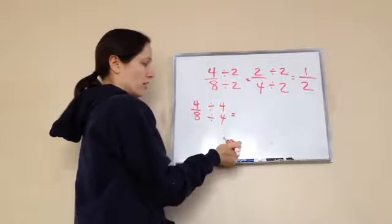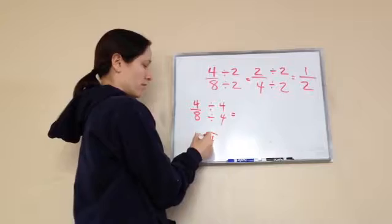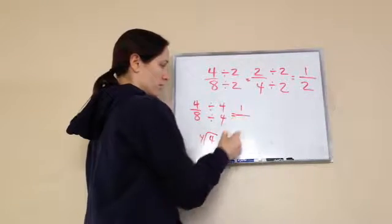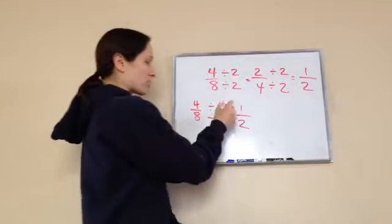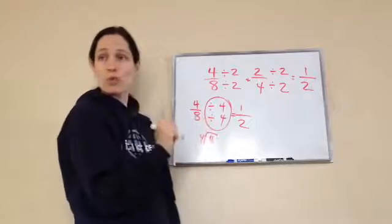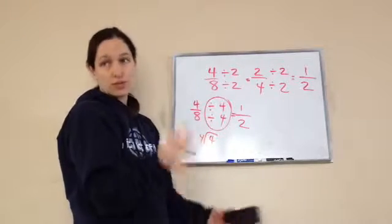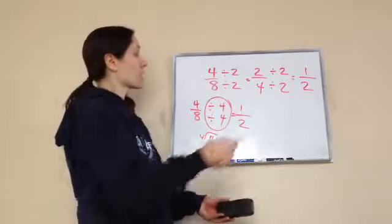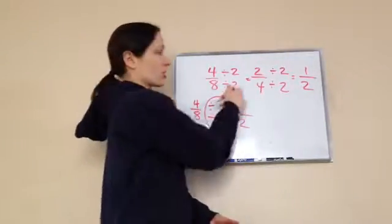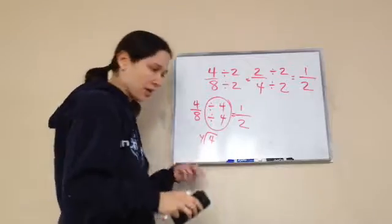So 4 divided by 4 is 1. 8 divided by 4 is 2. Here we go. So just by choosing a larger number to divide by, we only have to do one step. That's what they're wanting to show you today. I like the second way better. Yeah, because it's faster.